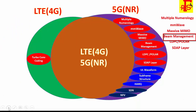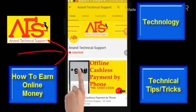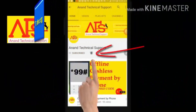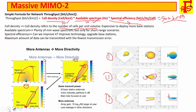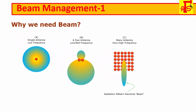Now we will see the beam management. From figures a and b, when we use low and mid range of frequency, we can transmit a signal in all directions, covering a relatively wide range. However, when we use very high frequency, we have no choice except using a high antenna array, and as a result the radiation pattern becomes a beam, as you can see in figure c.